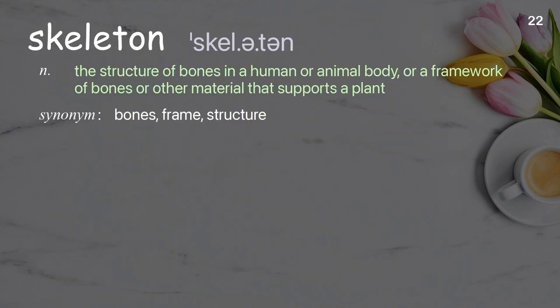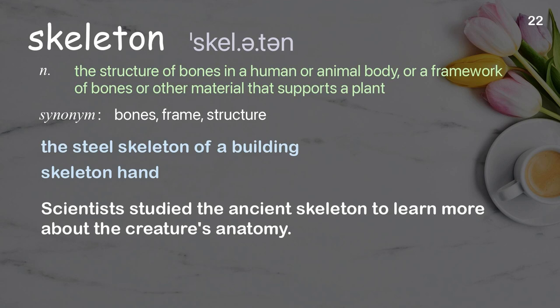Skeleton. The structure of bones in a human or animal body, or a framework of bones or other material that supports a plant. Examples: The steel skeleton of a building, skeleton hand. Scientists studied the ancient skeleton to learn more about the creature's anatomy.